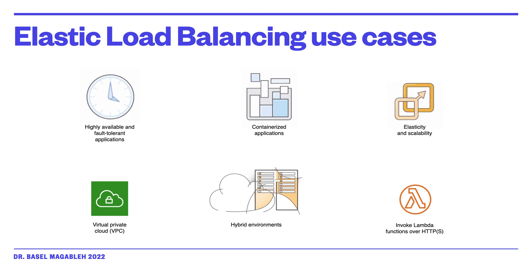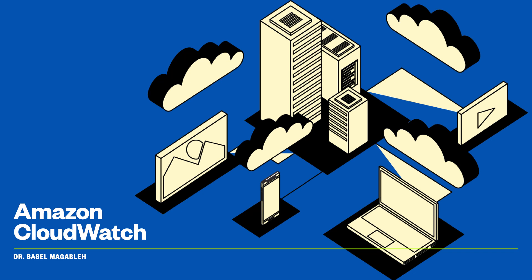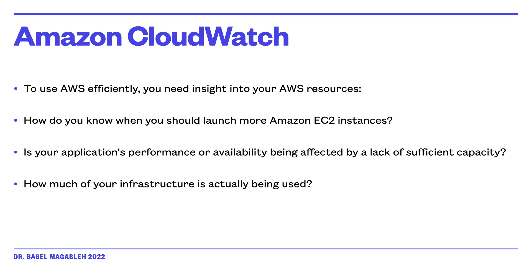Now let us look at the monitoring service of AWS, which is CloudWatch. To monitor your AWS resources efficiently, you need insight into your resources. For example, you might want to know when to launch more EC2 instances if application performance is being affected by a lack of sufficient capacity, or how much of your infrastructure is actually being used. You can capture this information with Amazon CloudWatch.